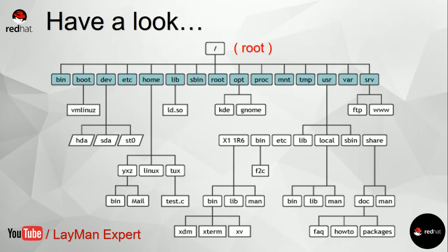Let's begin now. This is how the directory structure of a Linux operating system looks. This is the root directory and all other directories are inside this root directory. These are the different directories — I will explain what is the meaning of these different directories, why they are named so, and what kind of information, files, and configuration they hold.